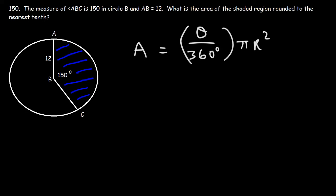Now, in this formula, theta has to be in degrees because 360 is in degrees. If theta is in radians, then you need to divide by 2 pi. 2 pi is equal to 360. So if theta is in degrees, divide it by 360. If it's in radians, divide it by 2 pi. So those are the two forms of this formula that you can use to calculate the fractional area of a circle.